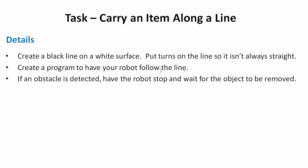We're going to create a program to follow that line, and also add secondary sensing to detect obstacles. We're going to use the color sensor to track the line on the surface, and then the IR sensor or ultrasonic sensor to detect an object. When an object is on the line, we'll stop, play a tone, or just wait. As soon as it's removed, we'll continue.